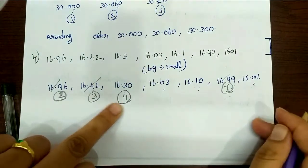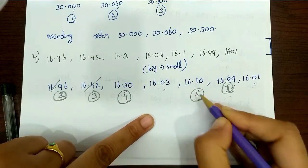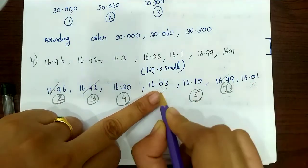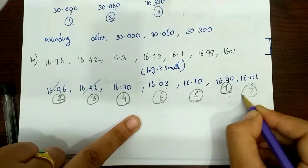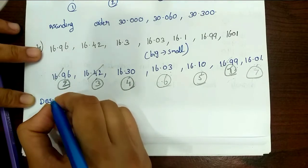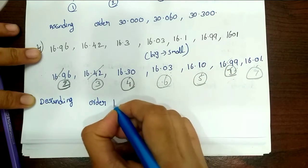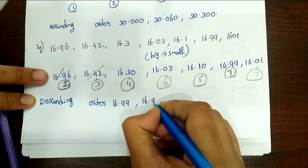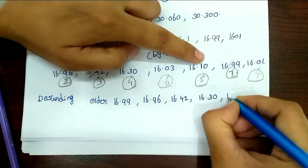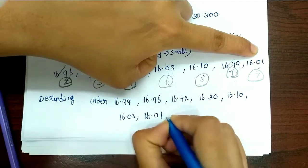Continuing: next digit comparison gives 3 as greatest — 16.30 is 4th. Then 16 with digits 1, 1, 0: 1 is greatest — 16.10 is 5th. Then 16.03 is 6th. Last is 16.01. So descending order is: 16.99, 16.96, 16.42, 16.30, 16.10, 16.03, 16.01.